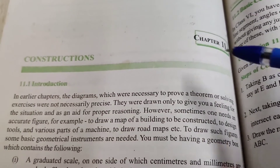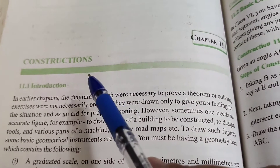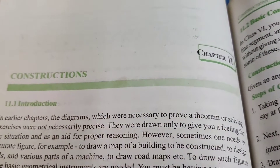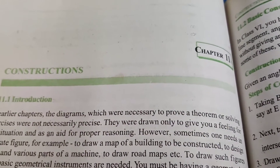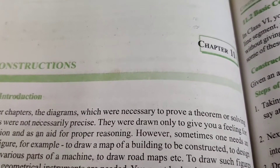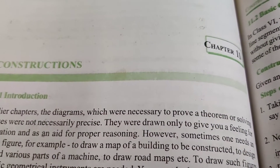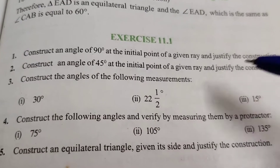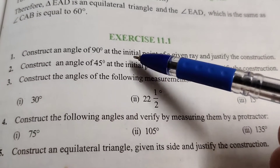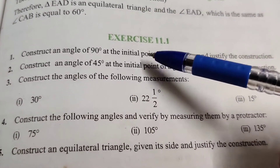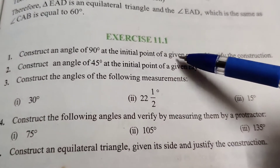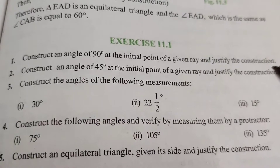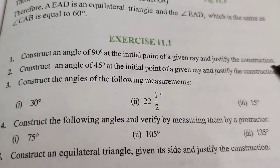Chapter 11 Constructions, Class 9. Now Exercise 11.1, Question number 1: Construct an angle of 90 degrees at the initial point of the given ray and justify the construction.